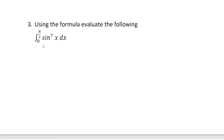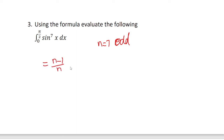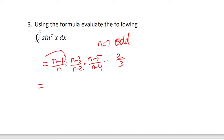Next, using the reduction formula, find ∫₀^(π/2) sin⁷x dx. For sin power n, the formula goes n−1 by n, times n−3 by n−2, and so on. For n=7: it is (6/7)·(4/5)·(2/3).